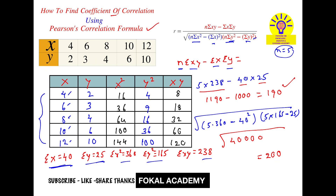So r equals 190 divided by 200. By simplifying this we get r equal to 0.95. So r, the coefficient of correlation, is 0.95. Between x and y, the coefficient of correlation is 0.95. This is the process of simplification. Thanks for watching — please subscribe, like, and share. Thanks.